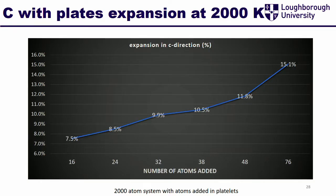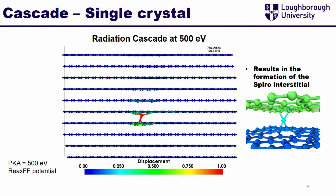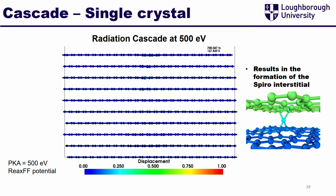One thing Ian looked at is: if you add more atoms in one layer, you get expansion of the c-spacing platelets. It's quite obvious — put in an extra platelet, an extra small layer of graphite in there, and that causes expansion of the c-spacing function. Moving on to some other work, we're looking at how radiation damage affects graphite.